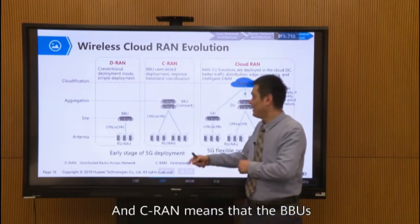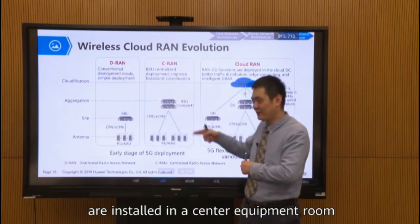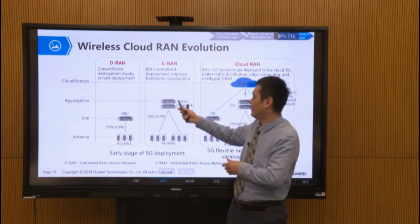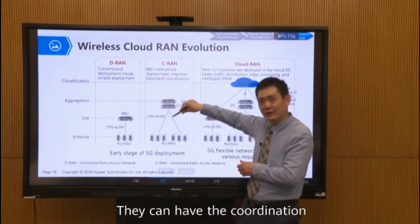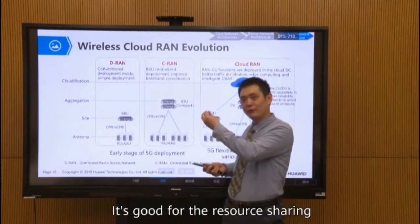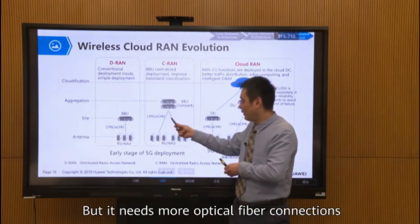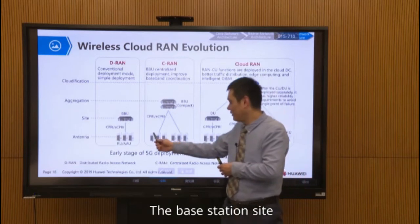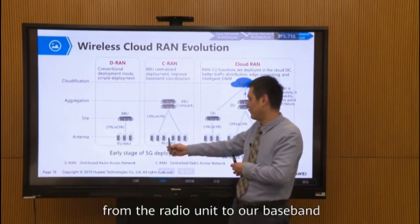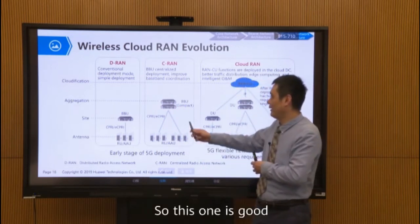CRAM means that the BBUs are installed in a central equipment room. This is convenient for baseband coordination — many BBUs installed together can share resources and enable cooperative coordination of baseband resources, which is good for resource sharing. However, it requires more optical fiber connections, as the base station side only has a radio unit and needs optical connection to the baseband.